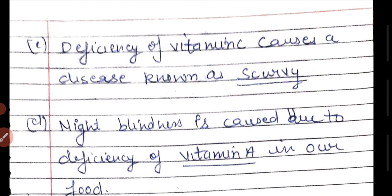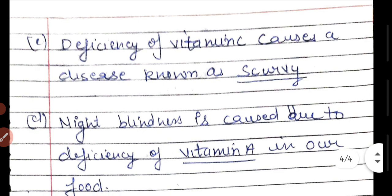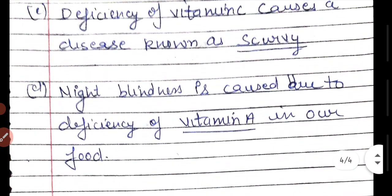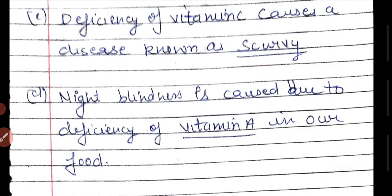Deficiency of vitamin C causes the disease scurvy. Night blindness is caused due to deficiency of vitamin A — we need to eat vitamin A to prevent it. Thank you for watching, guys. If you like my video, please subscribe to my channel.